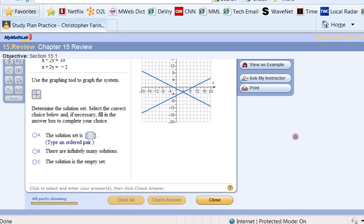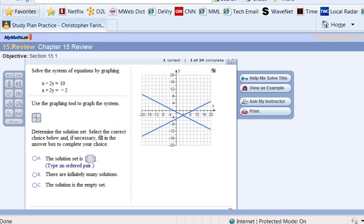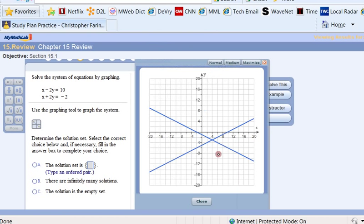And it's kind of hard to see where they intersect. So we know we've got the correct graph. It told us that. But let's magnify that and see if we can tell where it intersects.